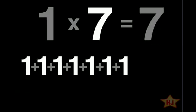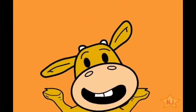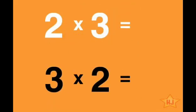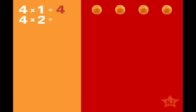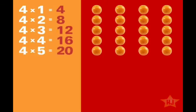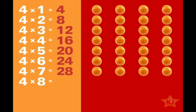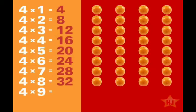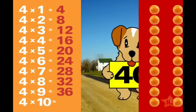4 times 1 is 4, 4 times 2 is 8, 4 times 3 is 12, 4 times 4 is 16, 4 times 5 is 20, 4 times 6 is 24, 4 times 7 is 28, 4 times 8 is 32, 4 times 9 equals 36, and 4 times 10 equals 40.